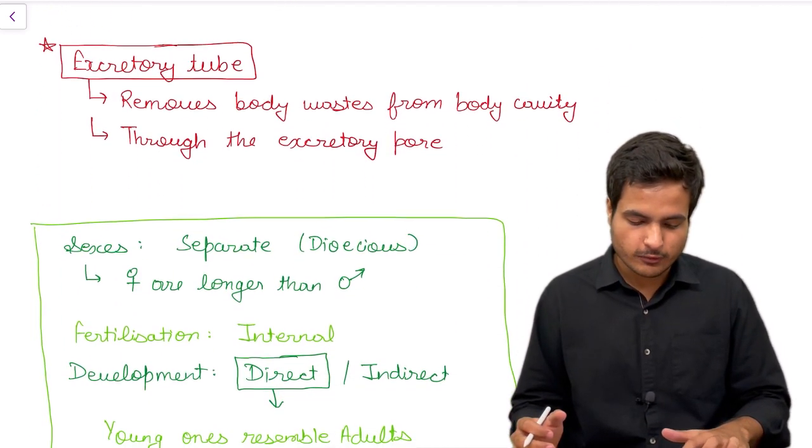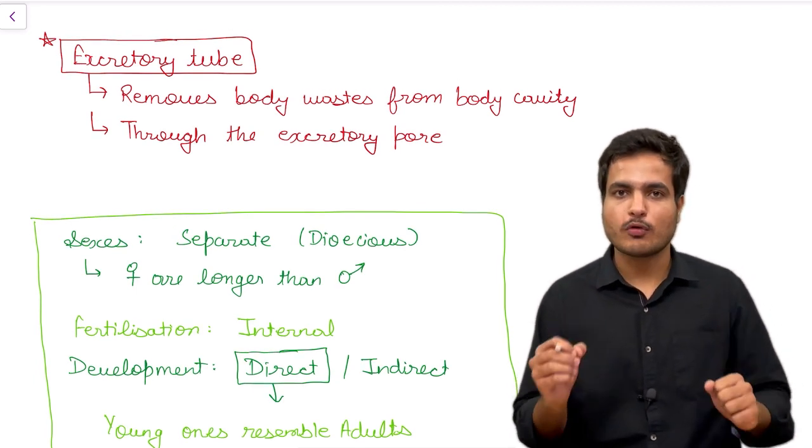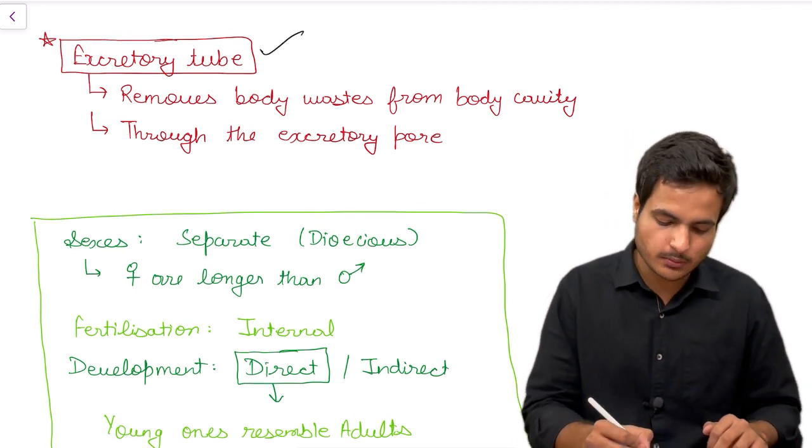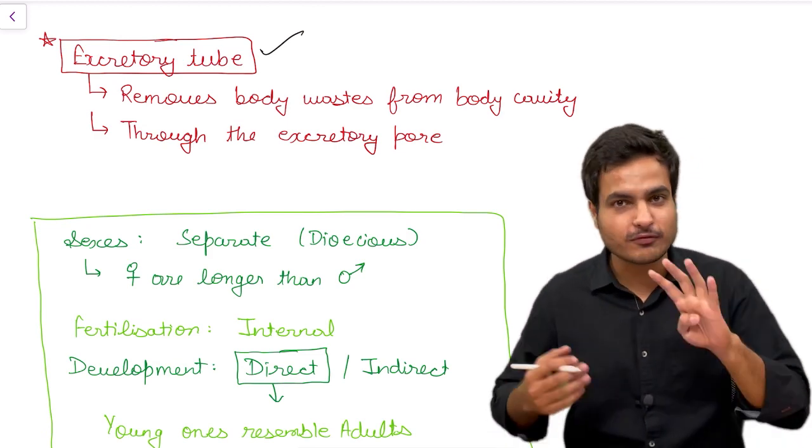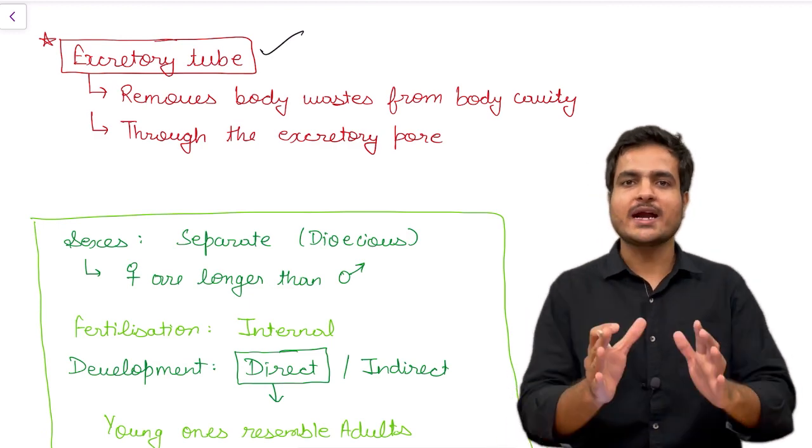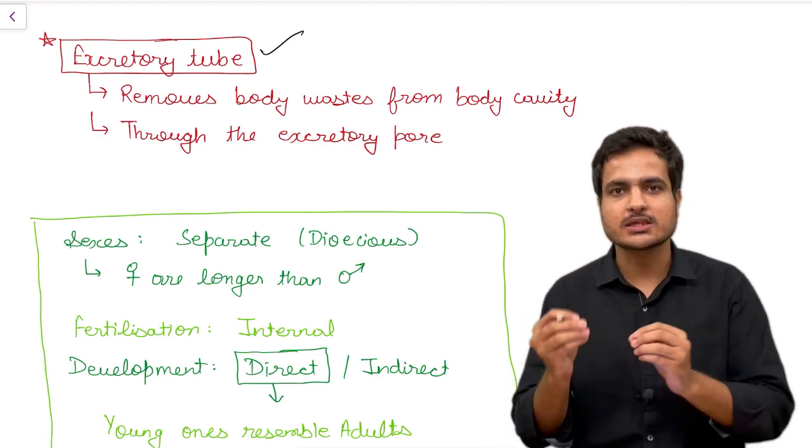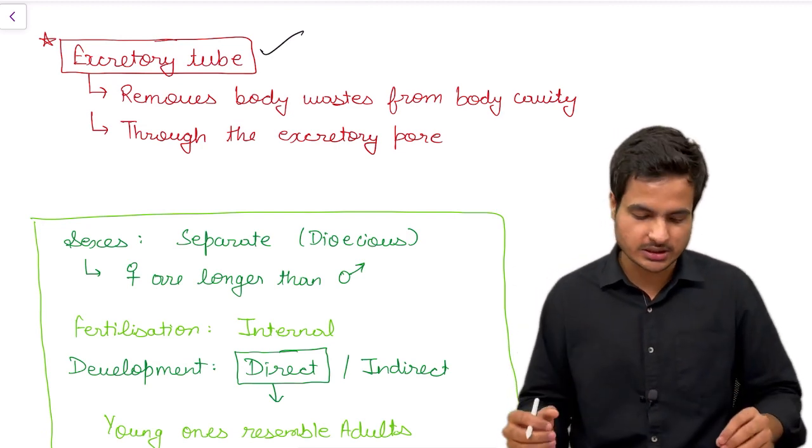Now let's talk about what deals with the excretion purpose of roundworms. They have excretory tubes in contrast to the flame cells present in our fourth phylum, Platyhelminthes that is flatworms. Flatworms had flame cells, specialized cells which did the work of osmoregulation and excretion.